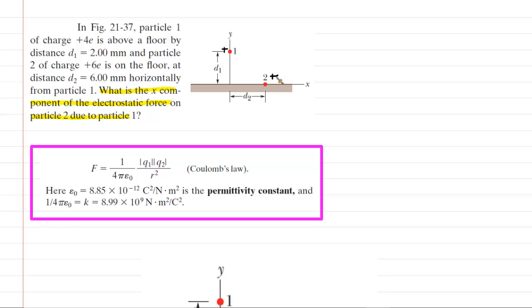And as a result, they're going to exert a repulsive force on one another. So for example, particle 1 is going to exert a repulsive force on particle 2.